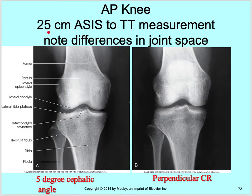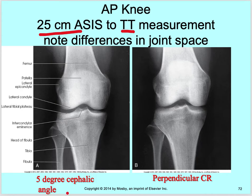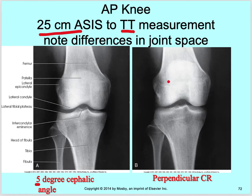For an AP knee with ASIS-to-tabletop measurement of 25 centimeters, note the difference in joint spaces. Both pictures are 25 centimeters — one has a 5 degree cephalad angle, and the other is perpendicular. You can see this joint space is very open with the cephalad angle, while the perpendicular one shows the medial epicondyle starting to close the joint. That's when it becomes important to use that 5 degree angle to open that joint space.